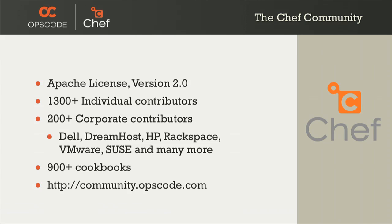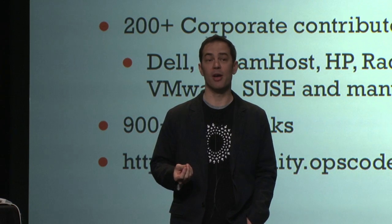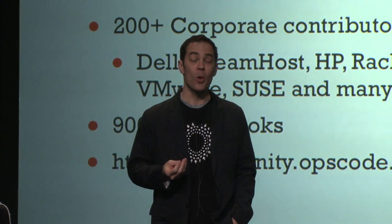Chef is Apache 2 licensed, just like OpenStack. This means you're free to do whatever you want with Chef, as long as you don't apply patents to it. Because of this permissive licensing, we've had over 1,300 individuals contribute code to Chef or some of the other Chef-related products.